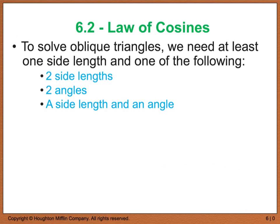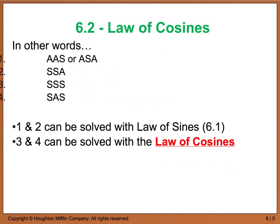We need to have at least one side length and some of the following: either two side lengths, two angles, or a side length and an angle. Using those combinations, we either get angle-angle-side, angle-side-angle, side-side-angle, side-side-side, or side-angle-side. The first three cases dealt with the law of sines back in section 6.1.